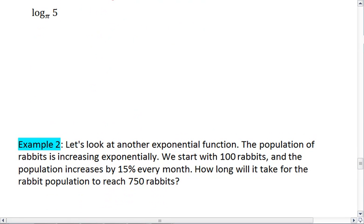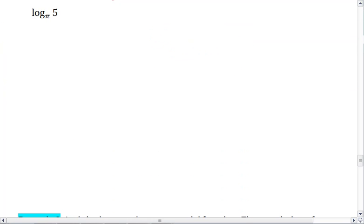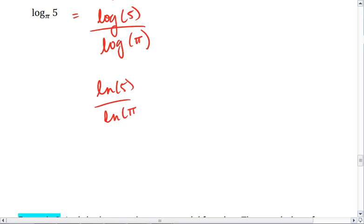And lastly, we have log of pi, or log base pi of 5. We can rewrite this as log of 5 divided by log of pi, or ln of 5 over ln of pi. Either way, we plug in the values into our calculator. We get 1.406, 1.406.